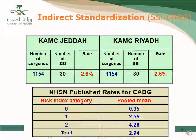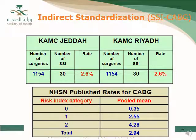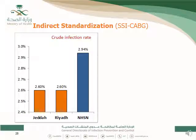However, when we apply the risk index category used in NHSN, the CABG NHSN rates by risk category are: risk index 0 = 3.35%, risk index 1 = 2.55%, and risk index 2 = 4.28%, with an overall of 2.94%. Comparing our crude rate of 2.6% to the NHSN 2.94%, our rate appears slightly lower — but this is the unadjusted crude comparison.